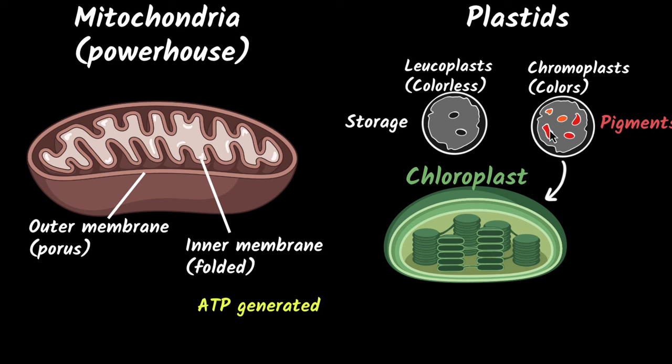Chloroplasts are the ones that have the green pigment. Chromoplasts can have different pigments and different colors, but the one that has the green pigment is what we call chloroplasts. The reason that's important is because not only is it green, but it's also responsible for photosynthesis. Chloroplasts are the ones that do photosynthesis.